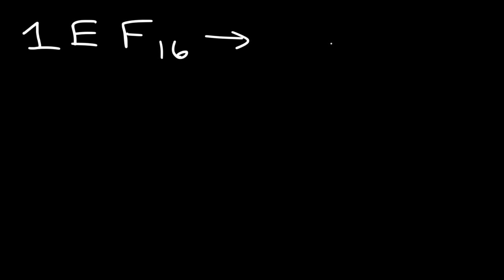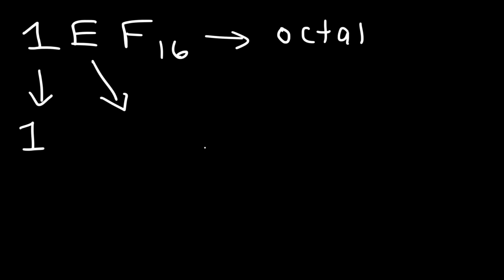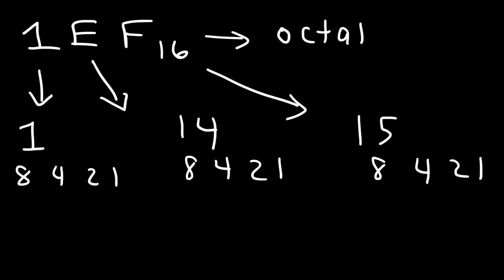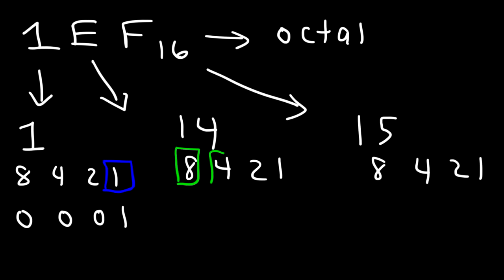Now let's try this example: 1EF. Let's convert that from the hexadecimal system to an octal number. We need to change the letter E into its decimal equivalent — E corresponds to 14, and F corresponds to 15. So now let's change these numbers into their binary equivalents using 8, 4, 2, 1. For the 1, all we need is a 1, so everything else we replace with a 0. To get 14, we need 8 plus 4 plus 2, which gives us 1, 1, 1, 0. To get 15, we need all four, so it's 1, 1, 1, 1.